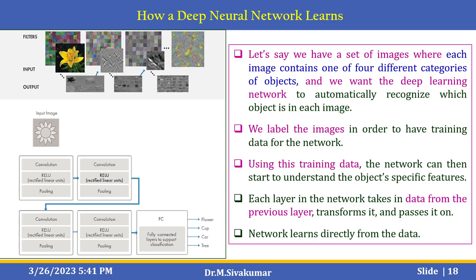To understand how a deep neural network learns: given a set of flower images with four categories, we want the network to automatically recognize which object is in each image. Using labeled training data, the network learns object-specific features. Each layer takes data from the previous layer, transforms it, and passes it on. The network learns directly from data through convolution and feature extraction layers, producing fully connected output showing possibilities like flower, cup, car, or tree.